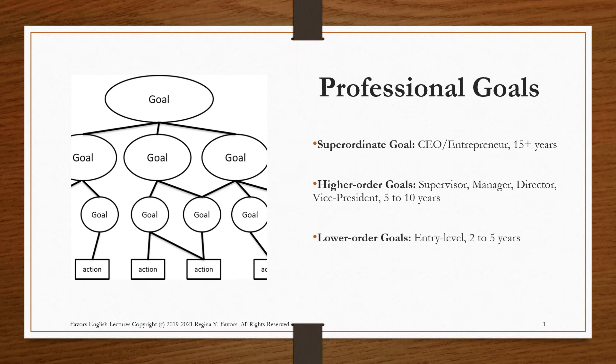The lower-order goal will be entry-level positions at 2 to 5 years, and the actions would be the degree you've already achieved and job applications. Your actions here would be applying for jobs, which could include a number of things.